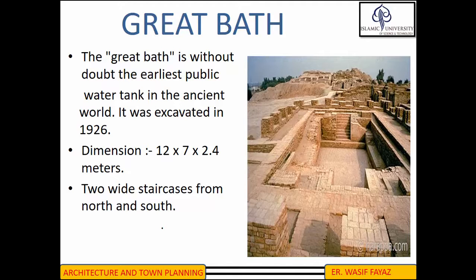Archaeological evidence indicates that the Great Bath was built in the 3rd millennium BC, soon after the raising of the Citadel mound on which it is located. The Great Bath of Mohenjo-daro is called the earliest public water tank of the ancient world. It approximately measures 12 meters by 7 meters and has a maximum depth of 2.4 meters. Two wide staircases, one from the north and one from the south, served as entry to the structure. A 1-meter-wide and 40-centimeter mount is present at the ends of these stairs.